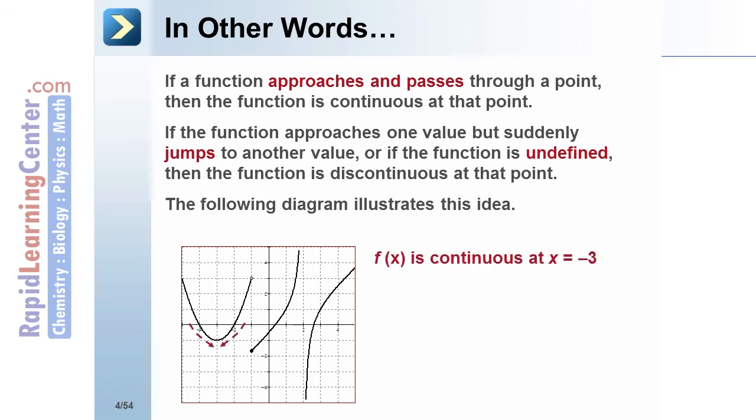As you approach x = -3 from the left and from the right, the function approaches the value -1 and f(-3) = -1. So f(x) is continuous at x = -3.